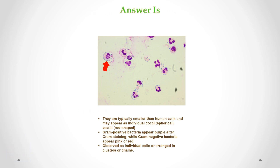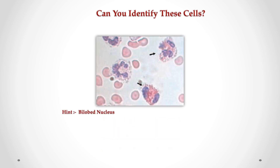Correct answer is bacteria. They are typically smaller than human cells and may appear as individual cocci (spherical) or bacilli (rod-shaped). Gram-positive bacteria appear purple after Gram staining, while Gram-negative bacteria appear pink or red. They may be observed as individual cells or arranged in clusters or chains. Can you identify these cells in CSF?